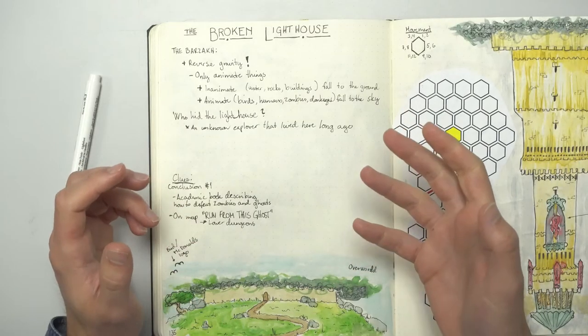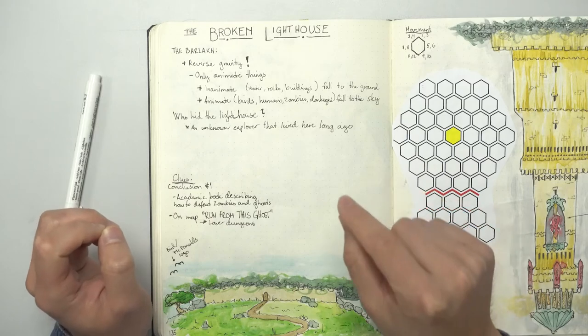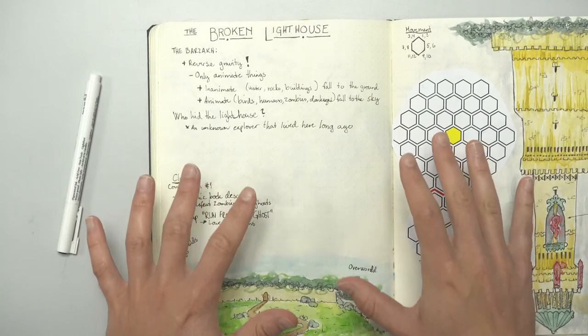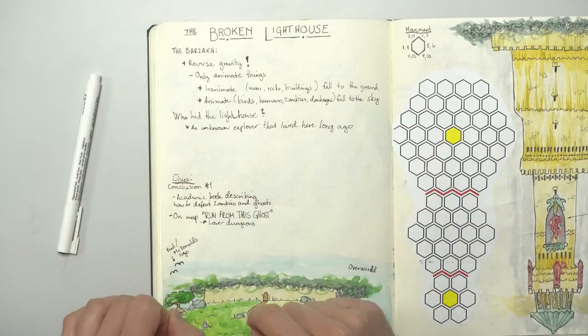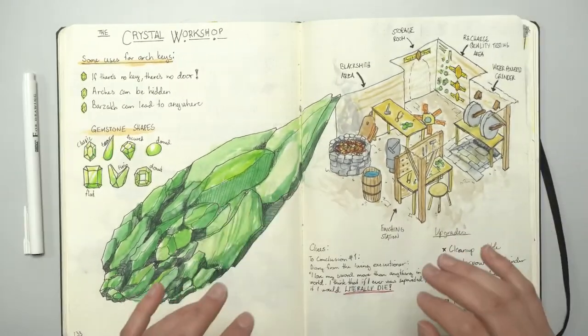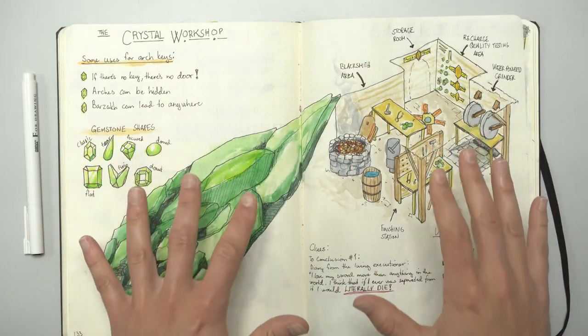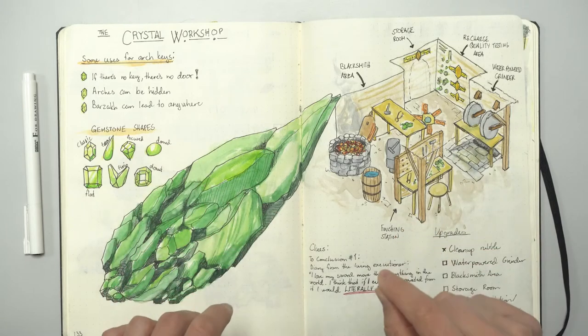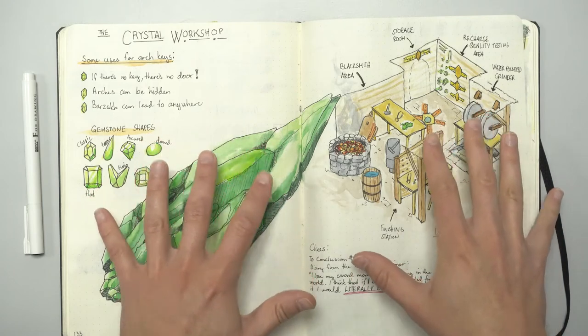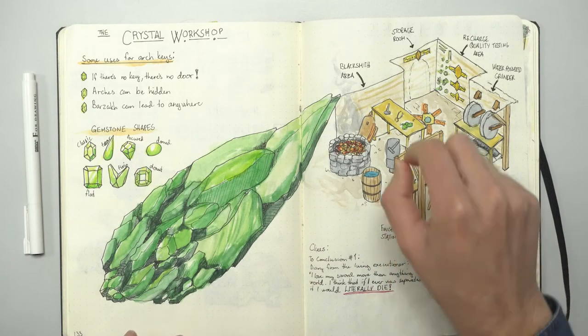The unknown explorer has found this book in a library and knows how to both defeat zombies and ghosts. I'll probably add a note on the map found in the lighthouse with run from this ghost with a large arrow pointing to the lower dungeons. For the third clue, well, let's hold off the third clue until the end of the episode. So, currently two clues to defeat the executioner, a diary and an academic book.